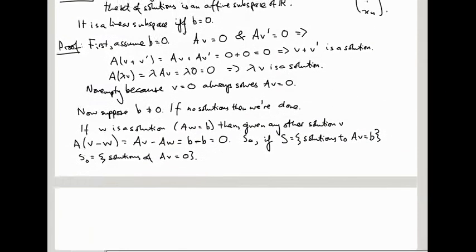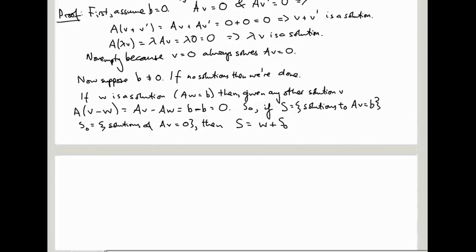And let me get another page. So what we've showed is that S equals W plus S0. In other words, if U is in S0, then W plus U is in S. That's just because A(W plus U) is AW plus AU, which is B plus 0, which is B. So that tells us W plus U is in S.